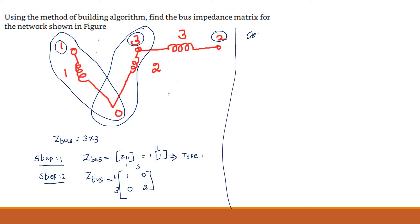So in step number 3, old bus 3 is connected to new bus 2 via element 3. This is type 2 modification. So how to write the Z bus? For this, Z bus equals - first of all, you have to write the old bus: that is 1, 0, 0, 2. Here 3 is connected to 2.